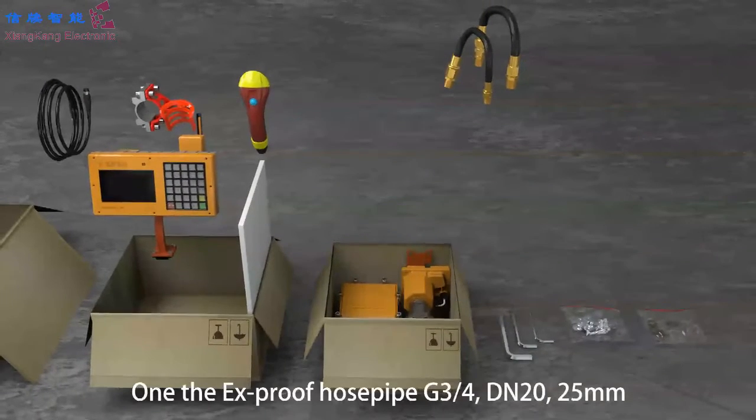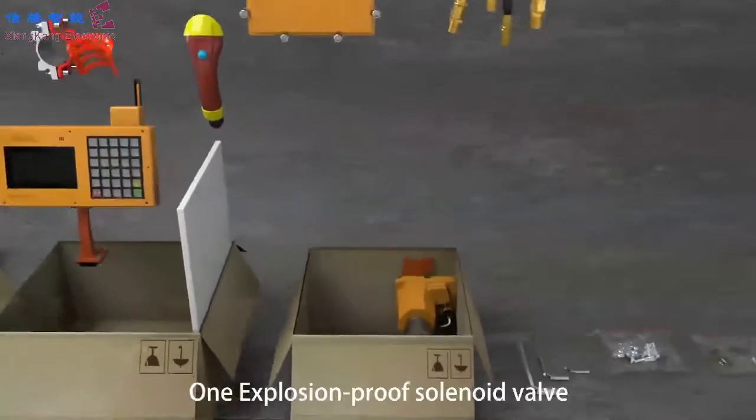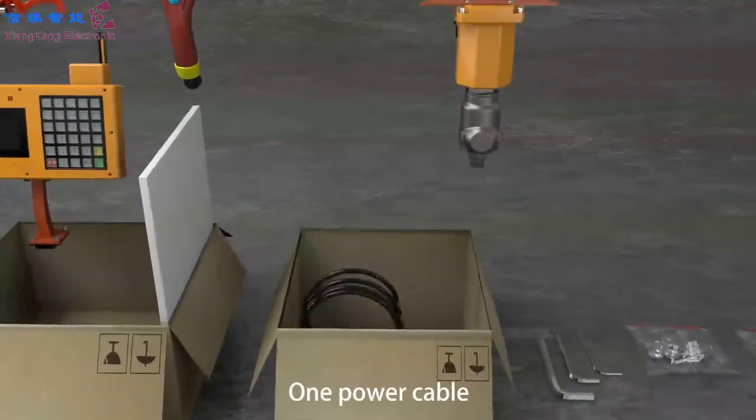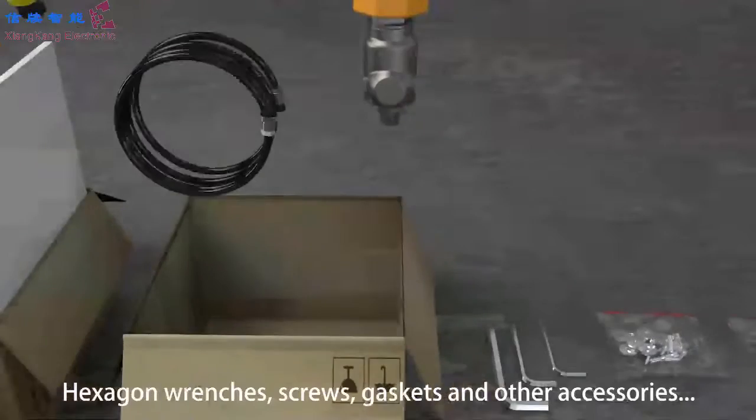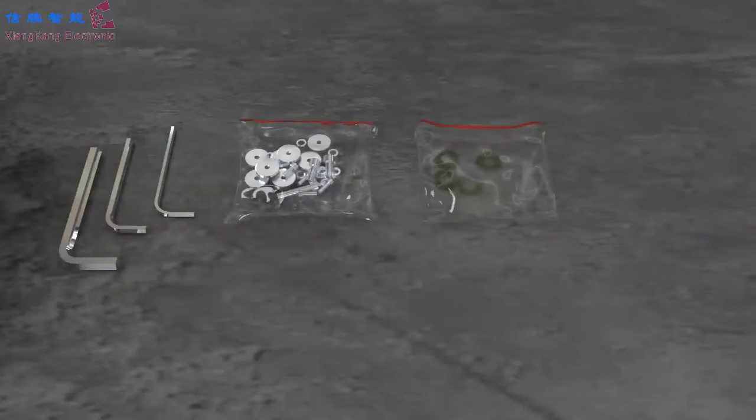One explosion-proof power box, one explosion-proof solenoid valve, one power cable, hexagon wrenches, screws, gaskets, and other accessories.